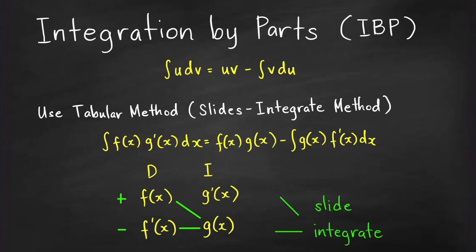This is the integration by parts formula: the integral of U dV equals UV minus the integral of V dU. In this lesson, we will be evaluating integrals using the tabular method. We will use this method — which I also call the slides-integrate method — for all integrals that can be evaluated by integration by parts. I'll explain the reason behind this name as we proceed.